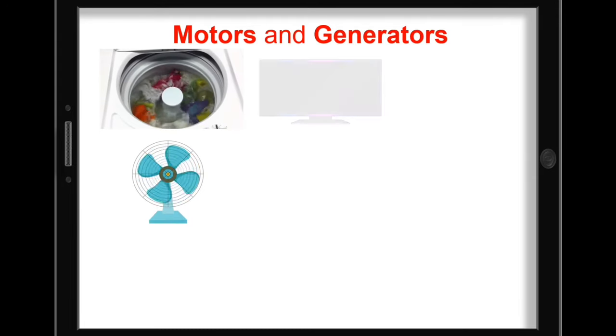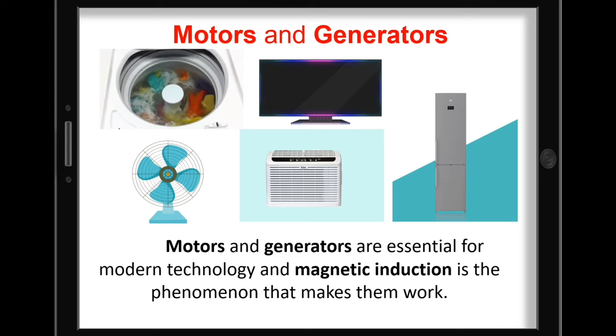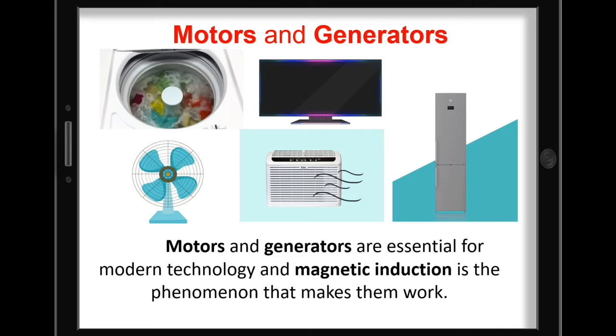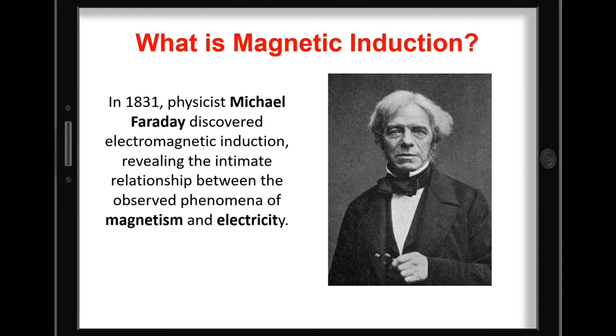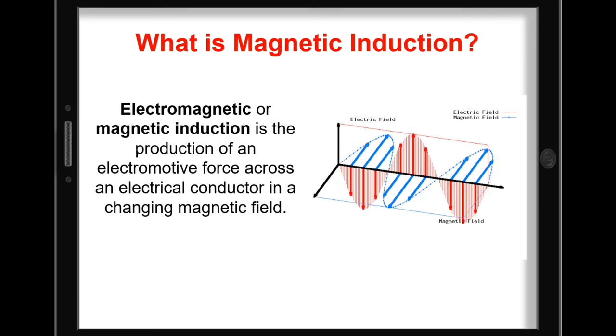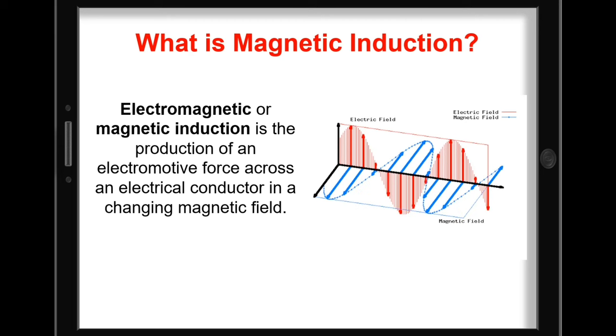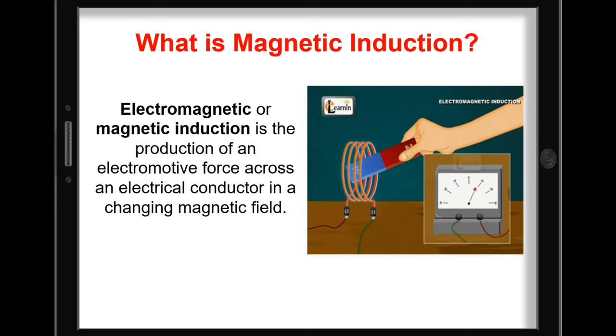Motors and generators are essential for modern technology and magnetic induction is the phenomenon that makes them work. What is electromagnetic induction? In 1831, physicist Michael Faraday discovered electromagnetic induction, revealing the intimate relationship between the observed phenomena of magnetism and electricity. Faraday discovered that electromagnetic or magnetic induction is the production of an electromotive force or EMF across an electrical conductor in a changing magnetic field.